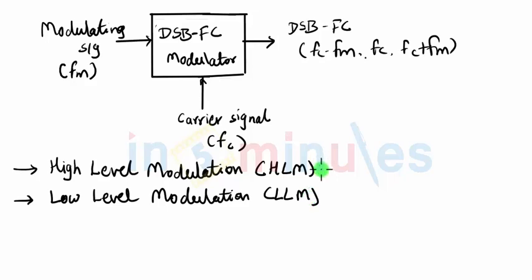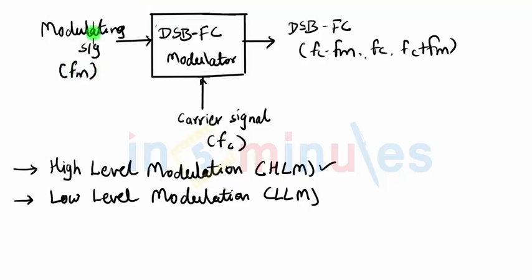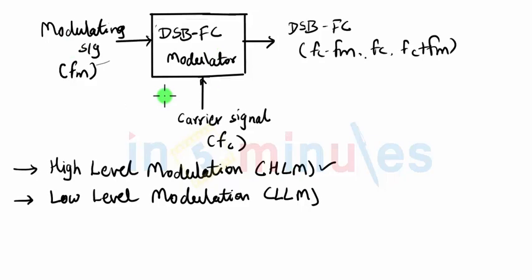In high level modulation, the modulation takes place at a high power level. This means the modulating signal is power amplified by a series of power amplifiers and then given to the modulator — this is called high level modulation. In HLM, the modulating signal already contains a large amount of power, and because the modulating signal is at a high power level, the carrier signal is also power amplified before being given to the modulator.